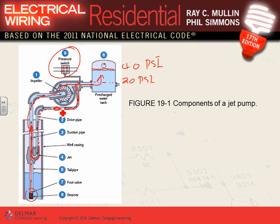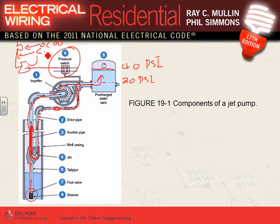The jet pump operation involves a drive pipe that shoots water through a loop, creating suction to pull well water up. As designers, our concern is: you need a disconnect right here, an overcurrent protection device, a conductor, a disconnect, and a controller. That's where we get involved.